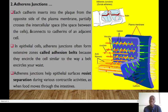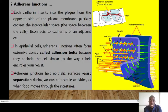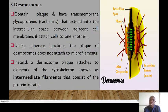Each cadherin normally inserts into the cell from the opposite side of the plasma membrane, partially crossing the intercellular space and then connects to the cadherins of adjacent cells. In epithelial cells, these adherent junctions often form extensive zones referred to as adhesion belts because they encircle the cells similar to the way belts encircle your waist. Adherent junctions generally help epithelial surfaces resist separation during various contractile activities.